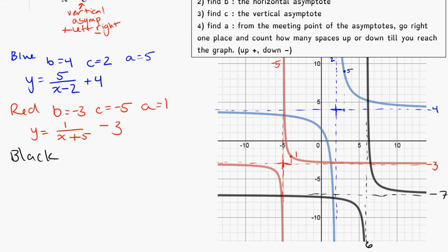And that happens to be at 6. So again, B being my horizontal, that is negative 7. C, in this case, my vertical, is 6.